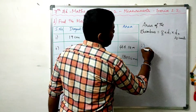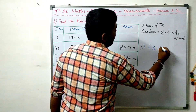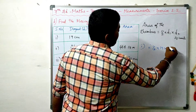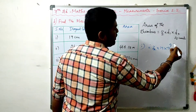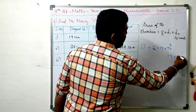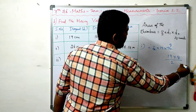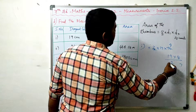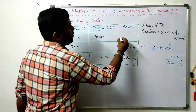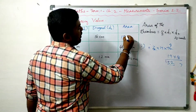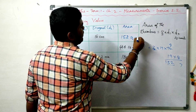Now we substitute: half into 19 into 16. Cancel 2: 8 twos are 16. So 19 into 8: 8 eights are 64, 9 eights are 72, remaining 7, so 8 plus 7 = 15. The area is 152 square centimeters.